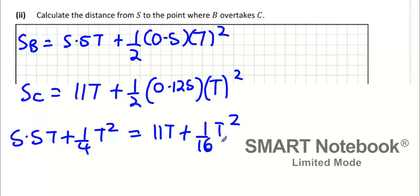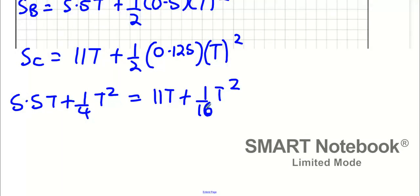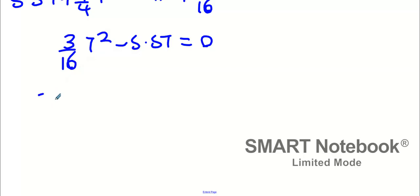A quarter take away one sixteenth is three sixteenths T squared. 5.5 take away 11 is minus 5.5T. We're going to get two answers: the T equals zero answer, which we were expecting, and then we're going to try and get the second answer now.